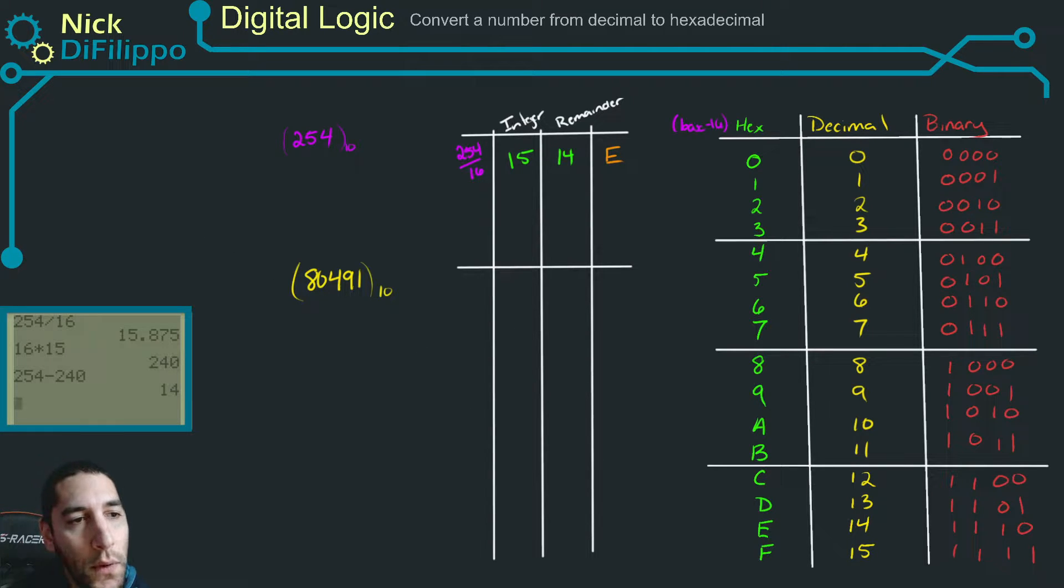Now, what we want to do is we want to take the integer value and then divide that by 16. So 15 divided by 16. Well, this goes in zero times. We have a remainder of, this goes in zero times. We have a remainder of 15.